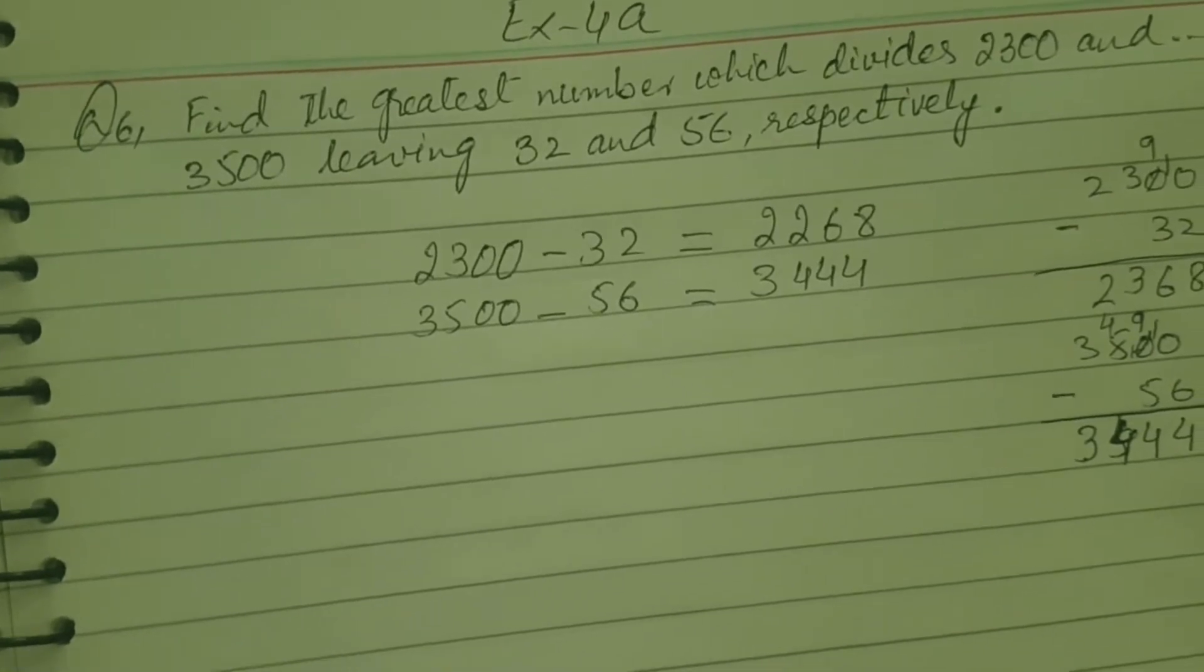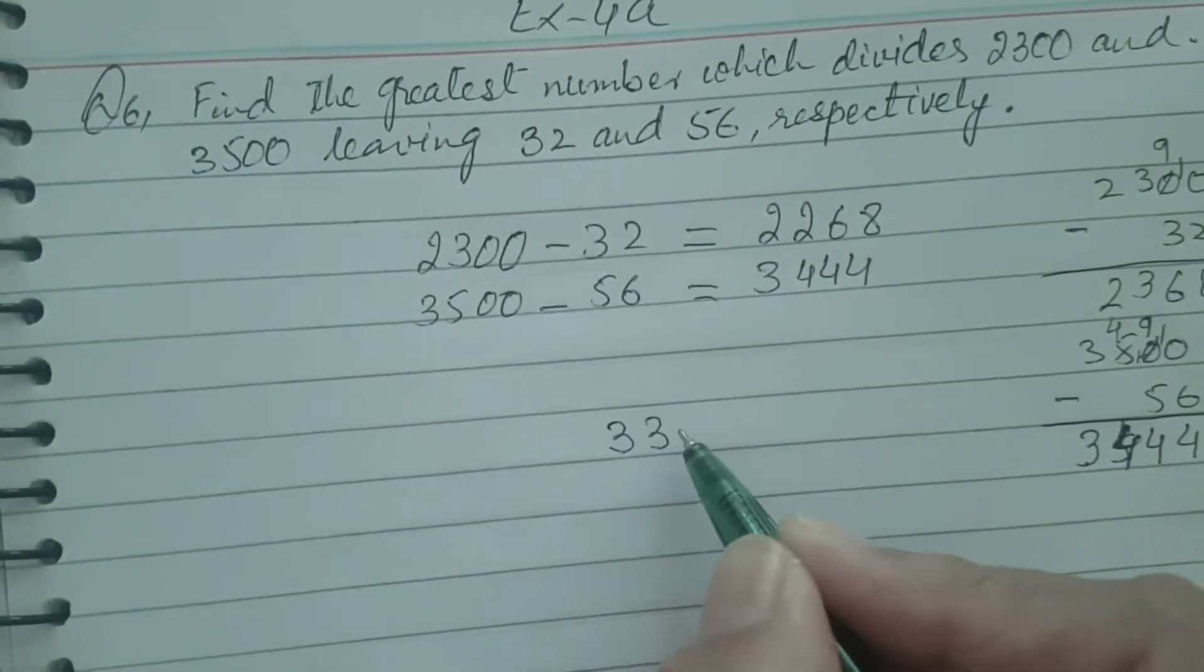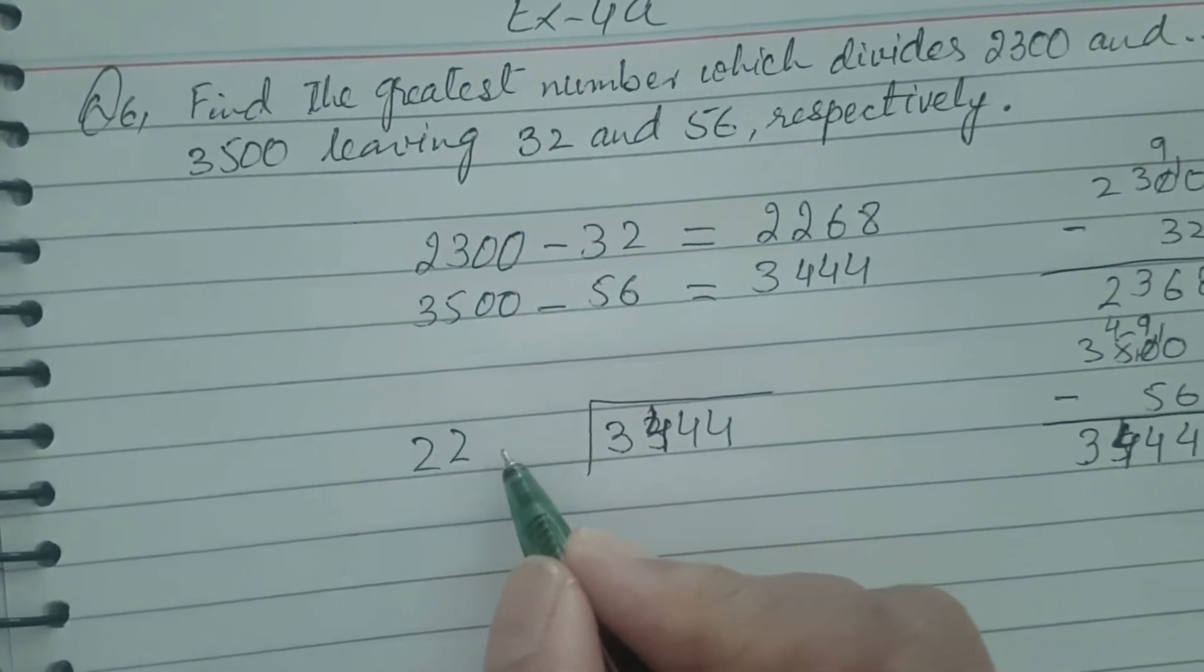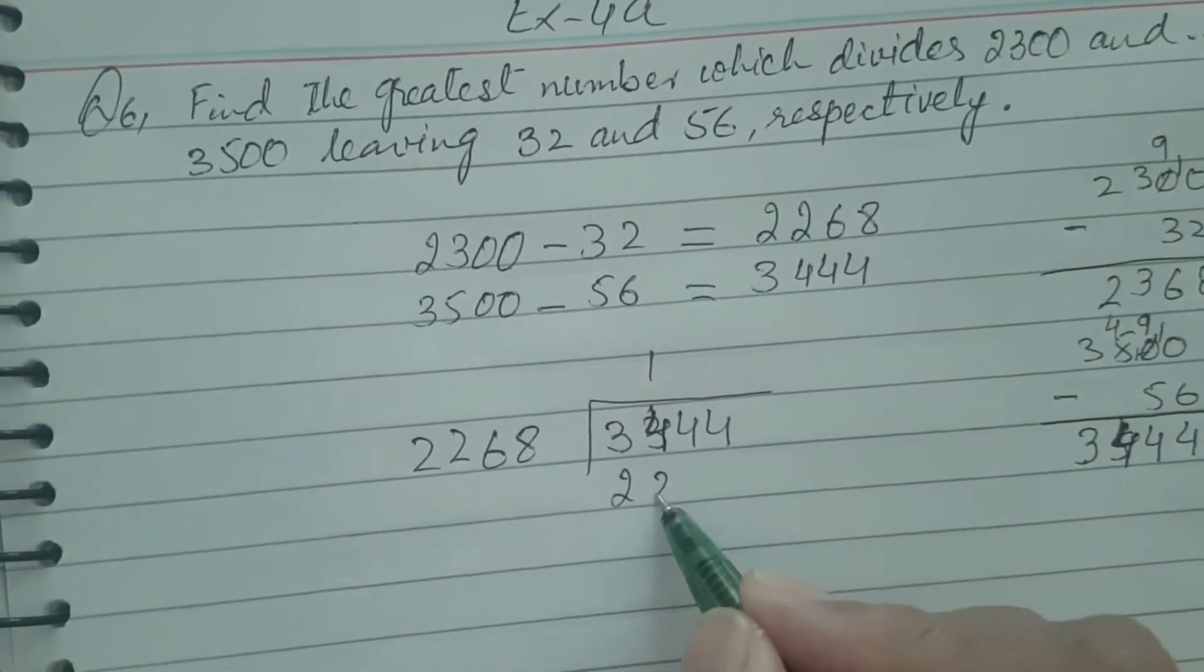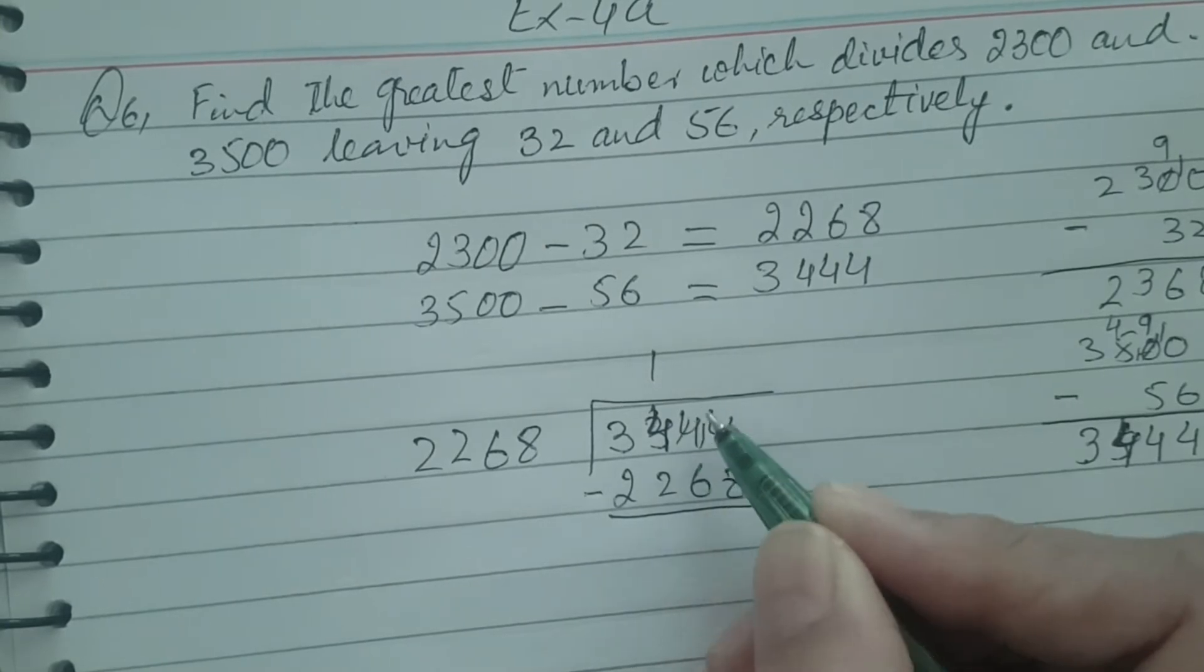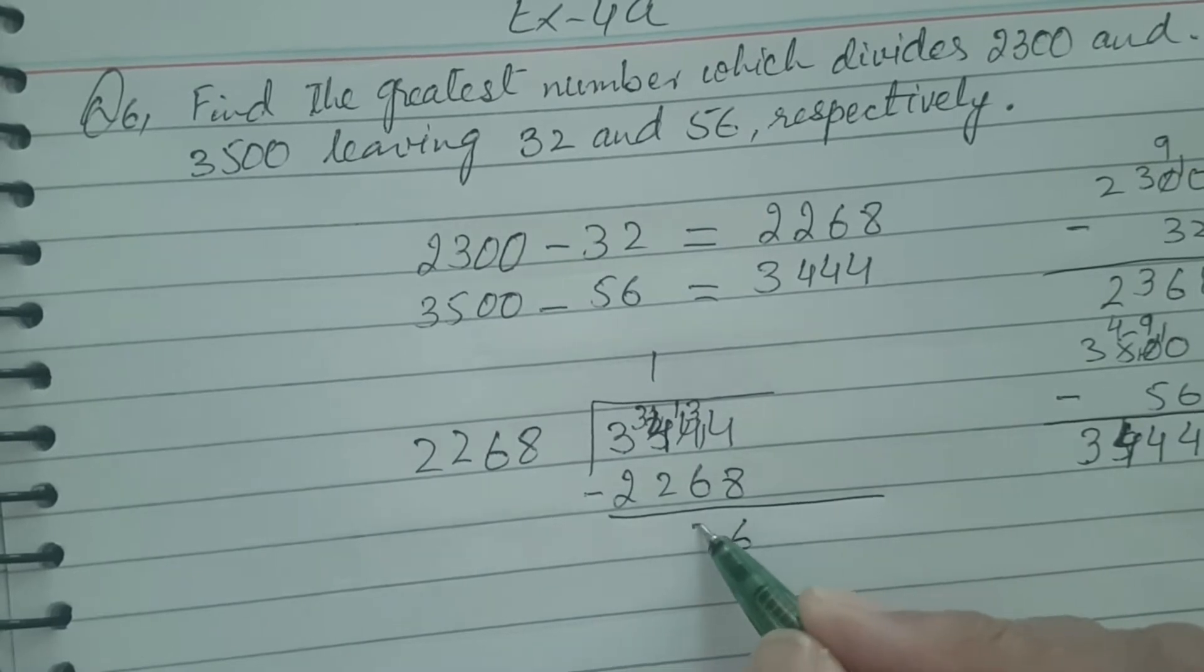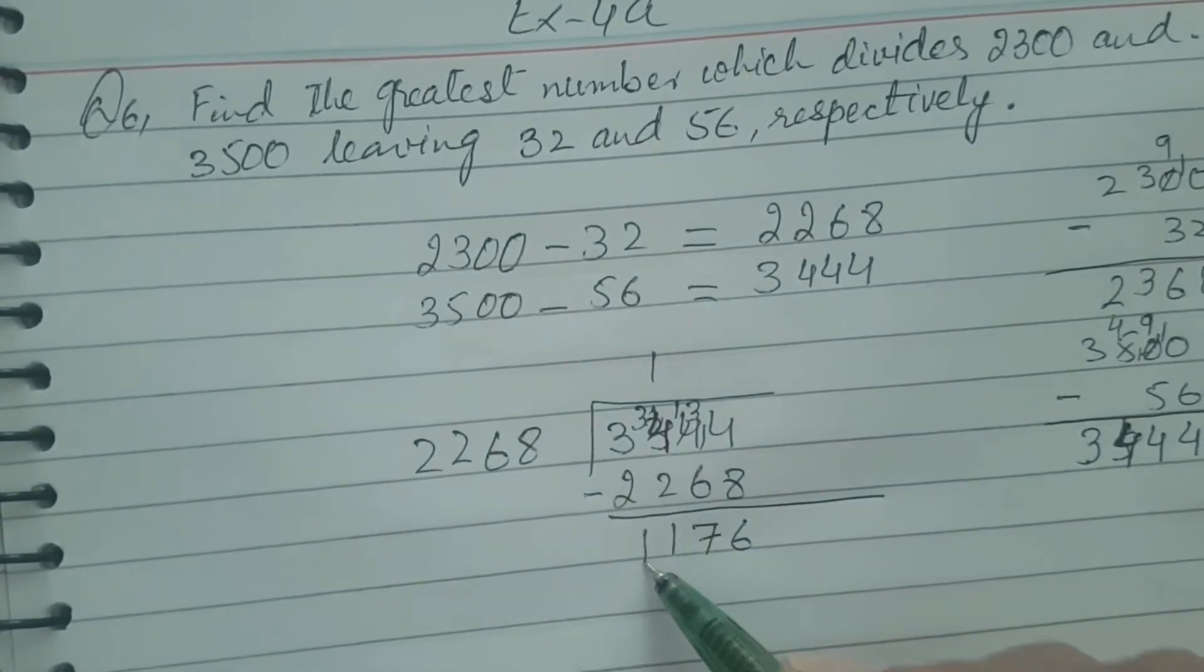Now from both numbers, the greatest number is 3444. This will be your dividend. The divisor is the smaller number, 2268. One time 2268. Do the subtraction for the next step. 14 minus 8 is 6, 13 minus 6 is 7, 3 minus 2 is 1. 1176 is the remainder.